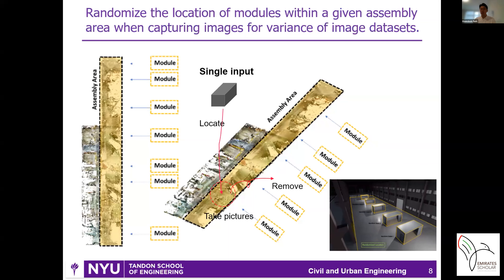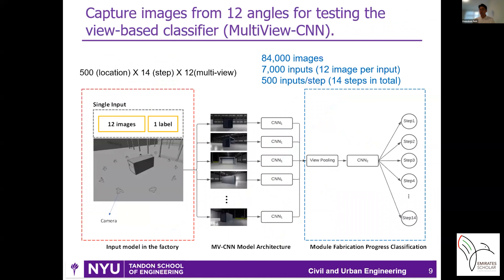The process works in this order: locate the 3D model within the assembly area, capture 12 images from virtual cameras, remove the module, and then iterate. Eventually, we obtained 84,000 images, which corresponds to 500 inputs per step.